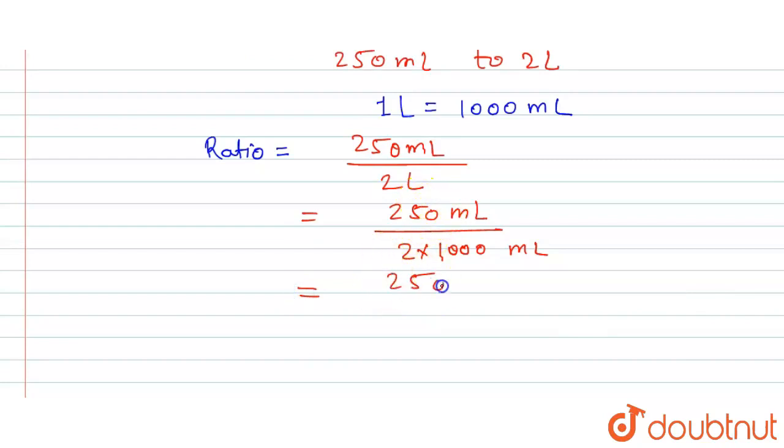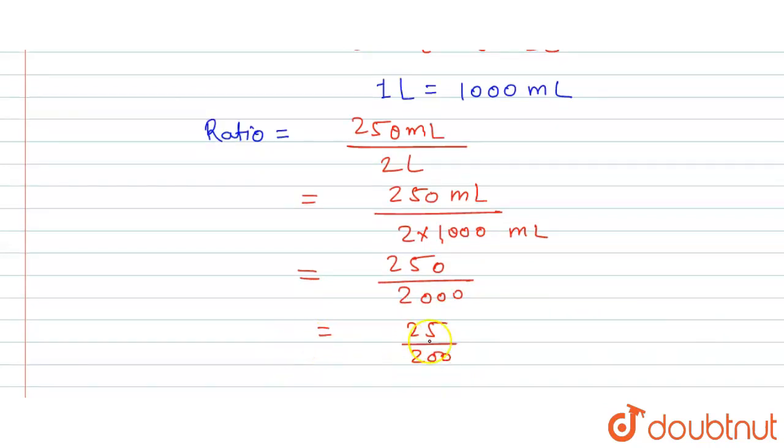So 250 upon 2000. One zero will be cancelled out, so 25 upon 200. Now we will divide this by 5.